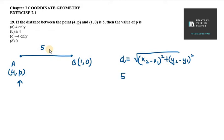Now how much is D? 5 is given to us. x2 is 1, x1 is 4, so 1 minus 4 whole square plus 0 minus P whole square.